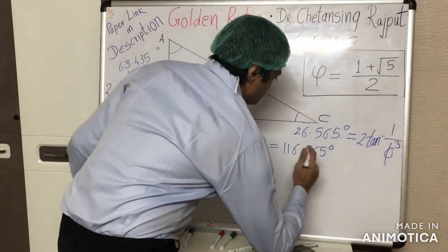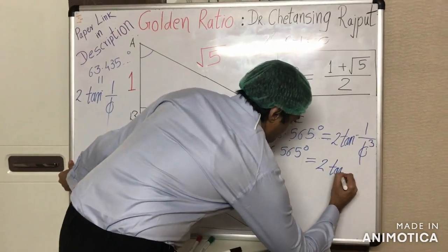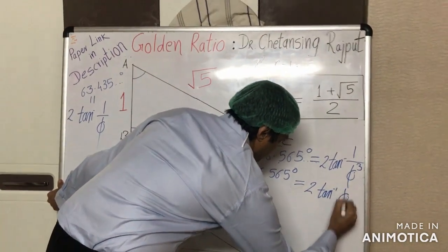And this value is precisely equal to twice the arc tangent of golden ratio.